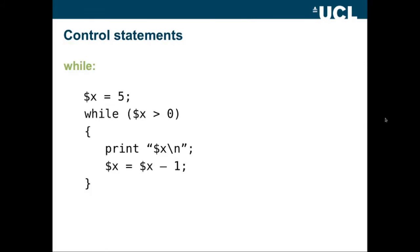The next type of control statement is a while statement. So here we're setting x to 5 and saying while x is greater than 0, begin a block, print x and then set x to x minus 1. So this will print 5, 4, 3, 2, 1.